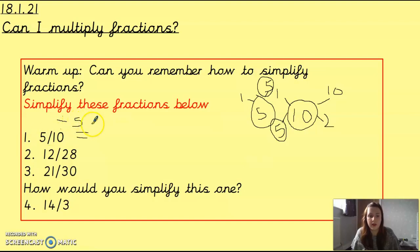So 5 divided by 5 would give us 1, 10 divided by 5 would give us 2. So if we simplified 5 tenths, we would get 1 half.